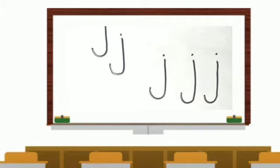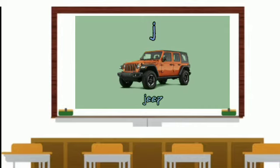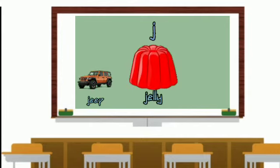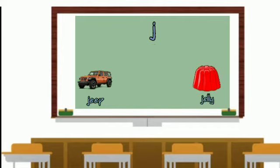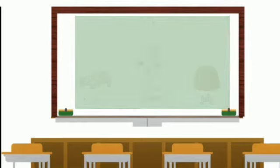So what are the things that begin with letter J? We will see that, and we'll also learn how to write on four lines. J for Jeep, J for Jelly, J for Joker.